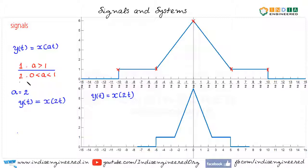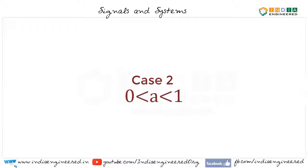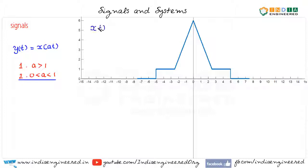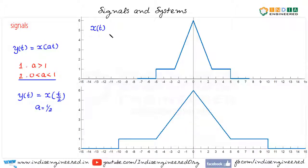Let's go ahead and see the second case where the value of a is between 0 and 1. Let's consider this signal x of t and let's say y of t equal to x of t by 2. Here a is 1 by 2. In this case, the signal should expand. Let's see the plot of y of t. This is x of t and here we have x of t by 2. x of 0 is same as y of 0, x of 5 became y of 10 and x of 2.5 became y of 5 and so on.